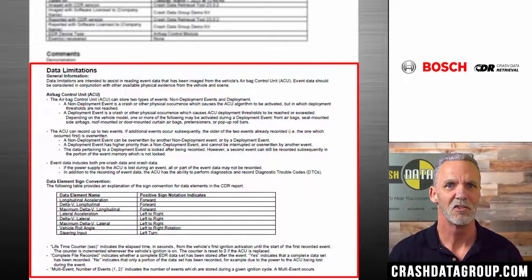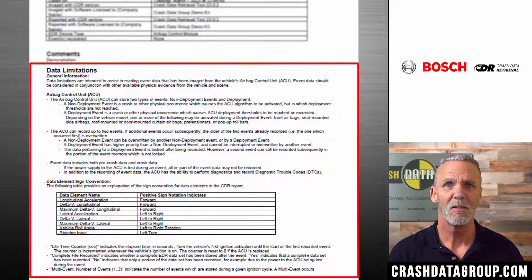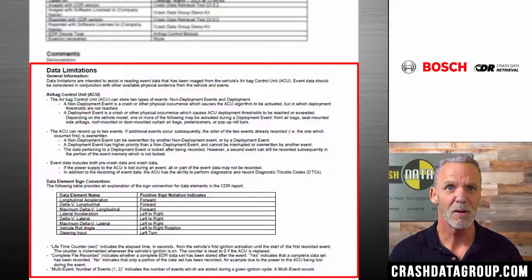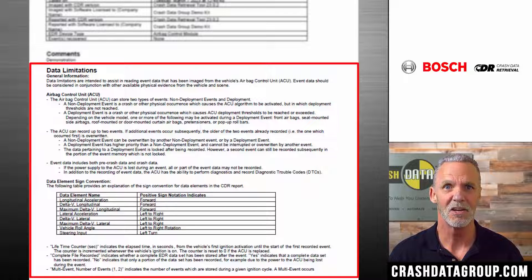So back to data limitations. In summary, data limitations vary greatly from report to report. The contents and sections are not the same in every report. The data limitations section of a report only applies to that report. Data limitations are occasionally updated by the auto manufacturers. So it really is important to always use the latest version of CDR software to open a .cdrx file to view a report, and always read the data limitations.